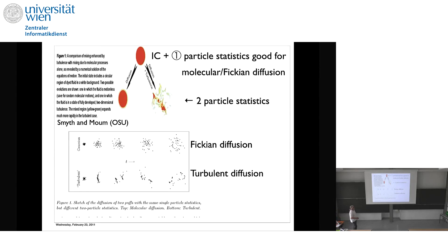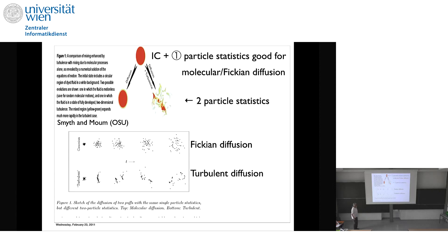When we look at Gaussian dispersion, Fickian diffusion models work really well. However, when we really look at the real ocean, turbulent diffusion gives us filamentation and patchiness — we see this all over the ocean in many different fields. The one-particle statistic does a pretty good job of describing simple diffusion, but when we look at turbulent diffusion which produces filaments and patchiness, people like to use two-particle statistics.